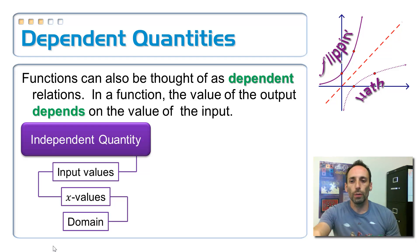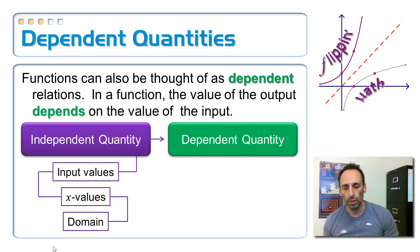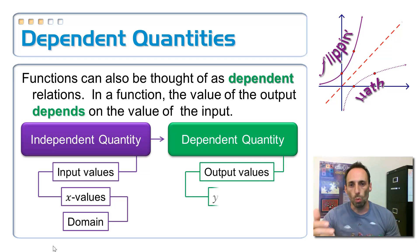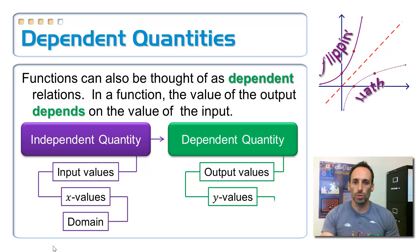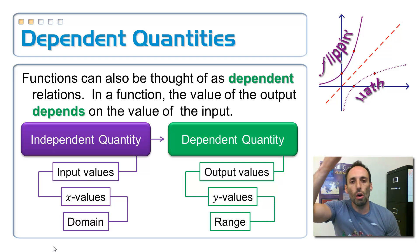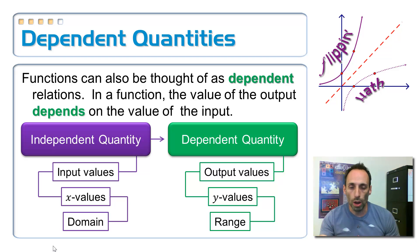If I stick in a number for my independent quantity, what comes out is the dependent quantity — its value depends on what I stuck in. The dependent quantity is the output values, the same thing as the y values. All of them taken together is the range. Dependent quantity or variable means the same thing as the output values, the y values, and the range.